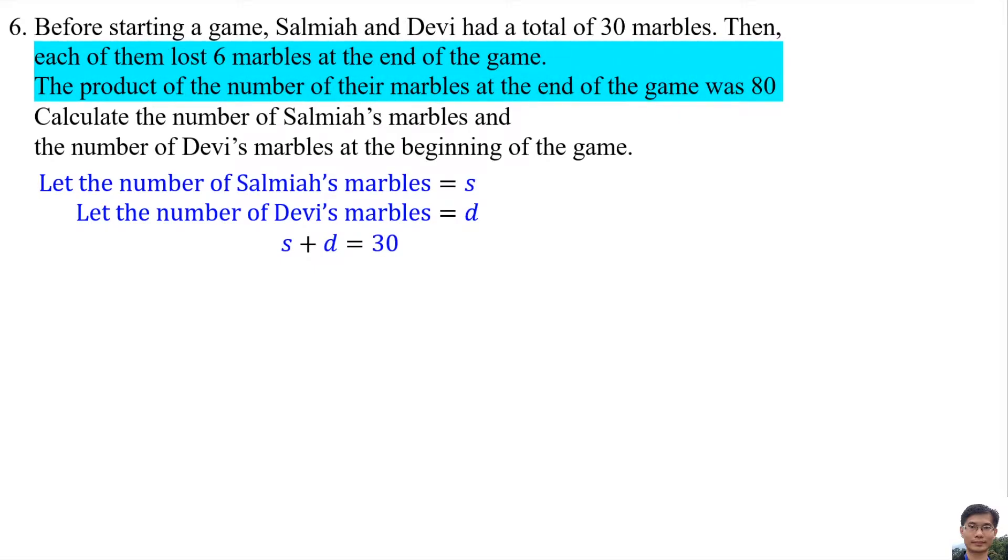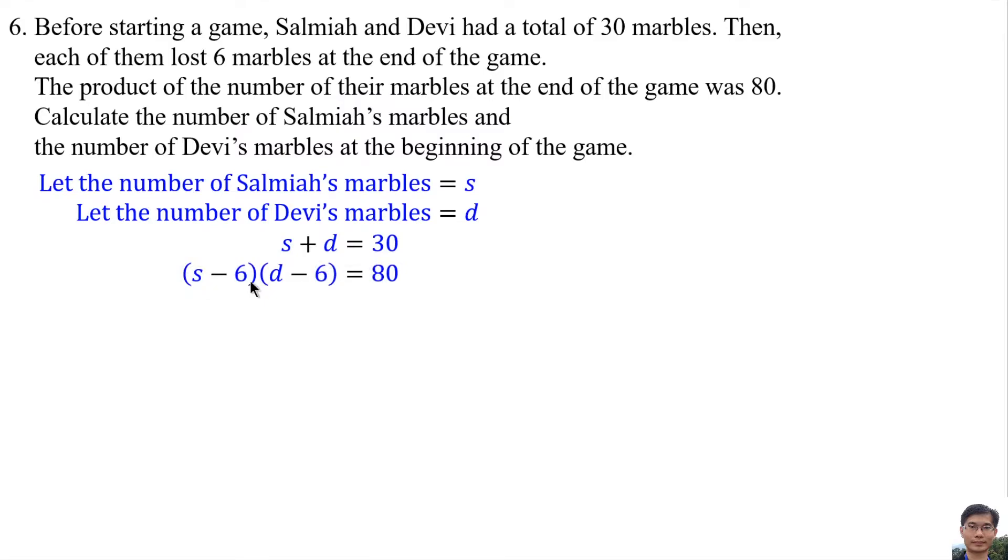Each of them lost 6 marbles at the end of the game. The product of the number of their marbles at the end of the game was 80. Lost 6 marbles means S minus 6 and D minus 6. The product means S minus 6 times D minus 6 equals 80.